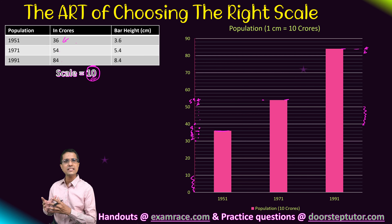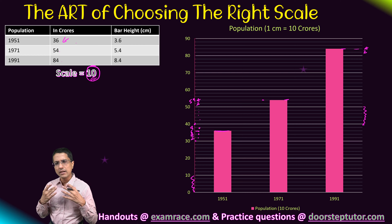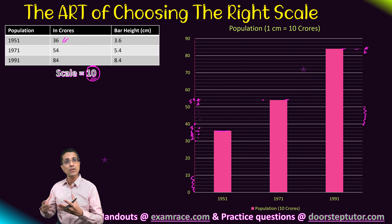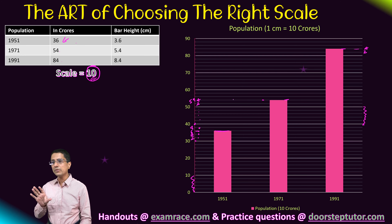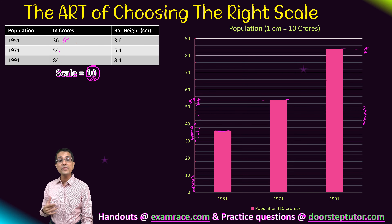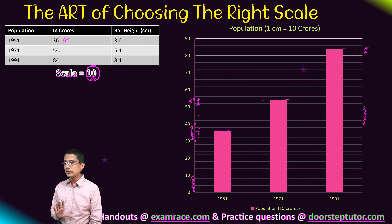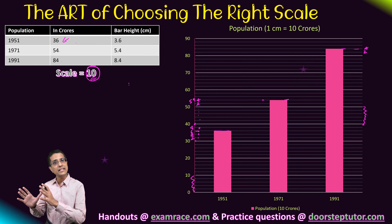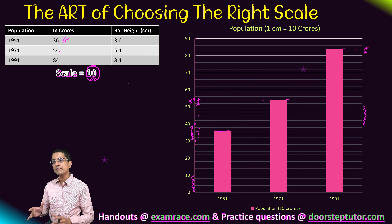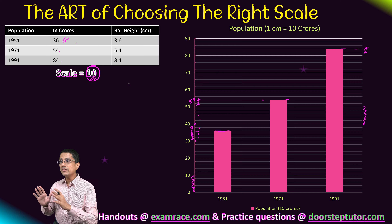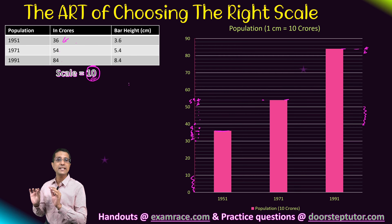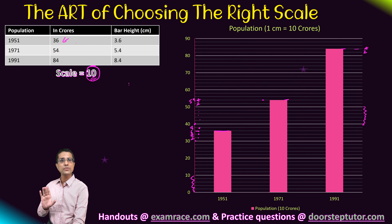If I chose a weird number like 7 or 9 as the scale, it might not be possible to represent some numbers at all, making it impossible to draw a correct bar graph. So if you cannot choose any other scale, always choose a power of 10: 10, 100, or 1000.